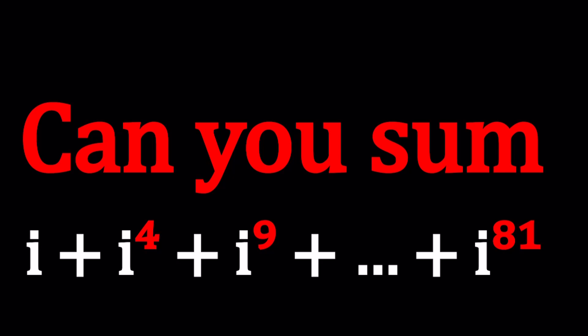We have i plus i to the 4th plus i to the 9th plus all the way up to i to the power 81. Now this might look a little ambiguous because we didn't specify what the powers are. But if you look at them carefully you'll hopefully realize that the powers are perfect squares. So in other words i is raised to the power 1 which is 1 squared, then 2 squared, then 3 squared, all the way up to 9 squared.